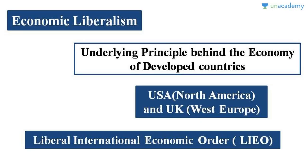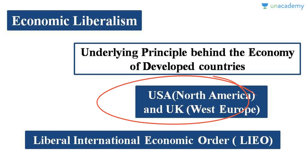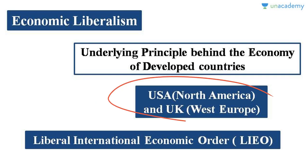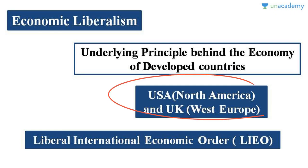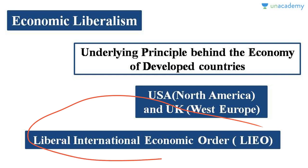The international economic order we see today is made primarily by developed countries — US and UK — which have traditionally had trade surpluses. The economies of these countries work on the principle of liberalism. So the underlying theory of the international economic order today is economic liberalism, because it was primarily built by developed countries of Western Europe and North America.